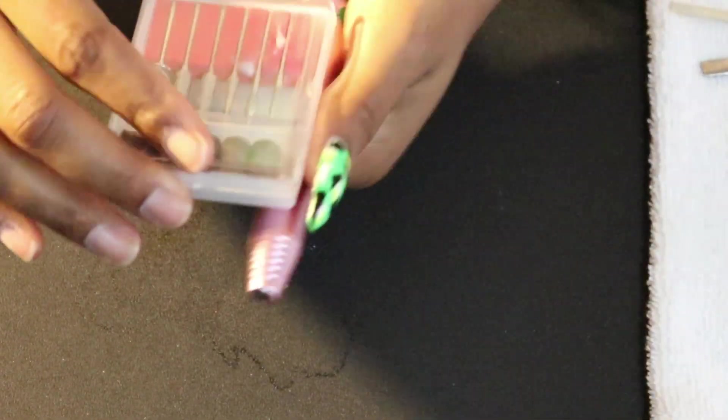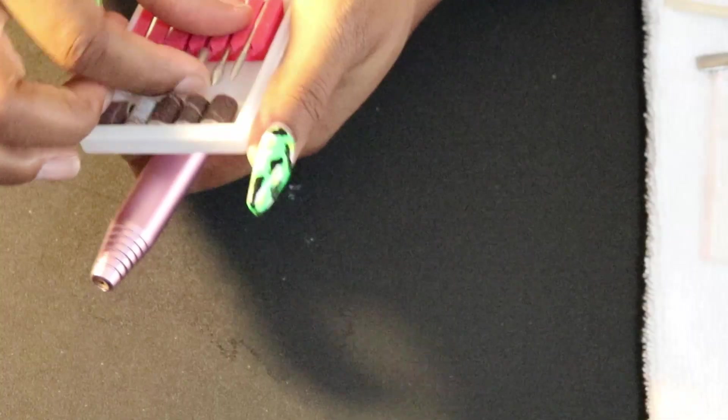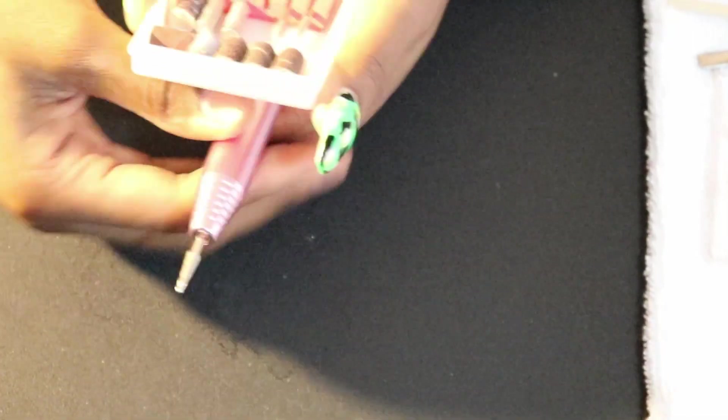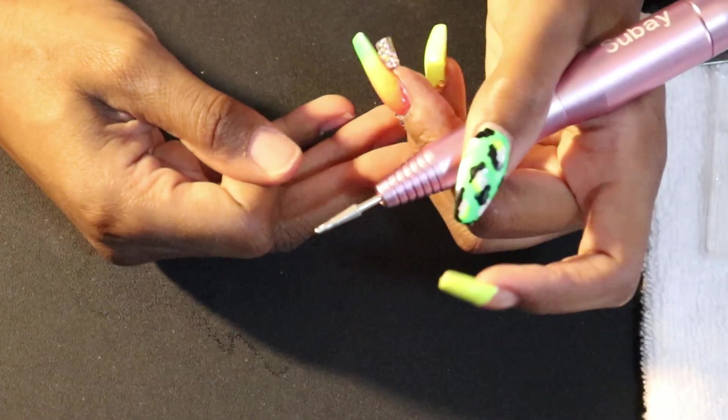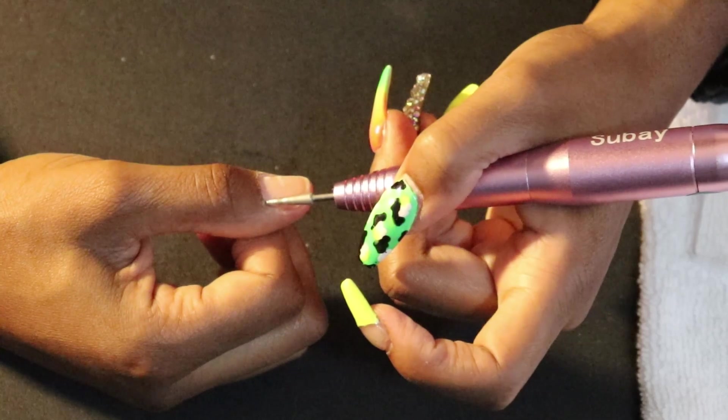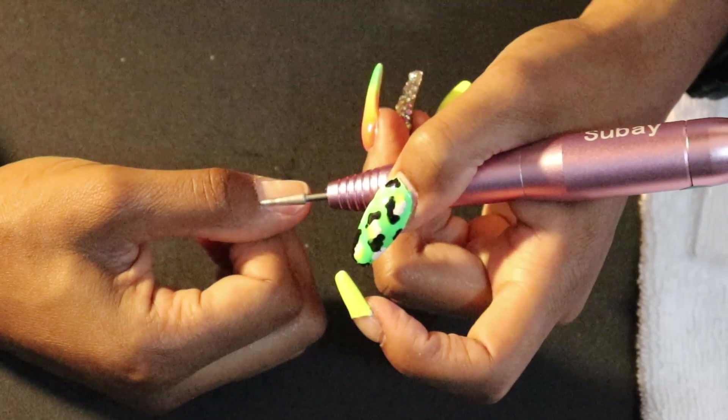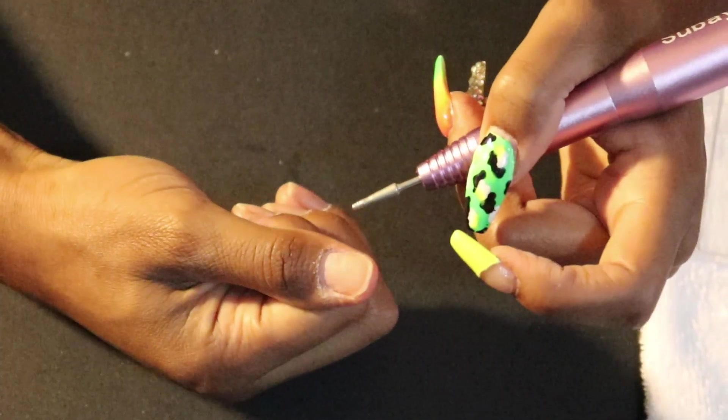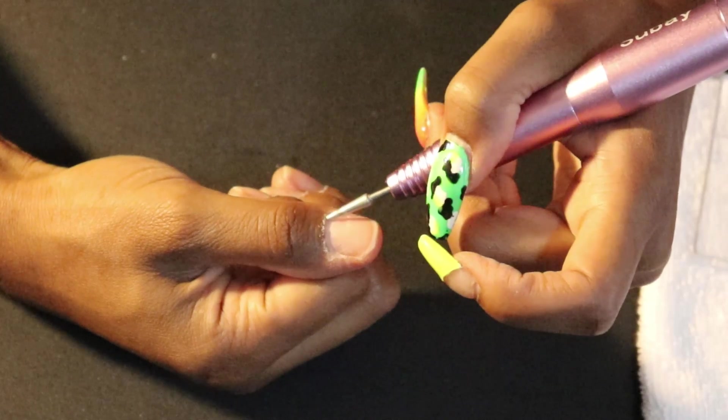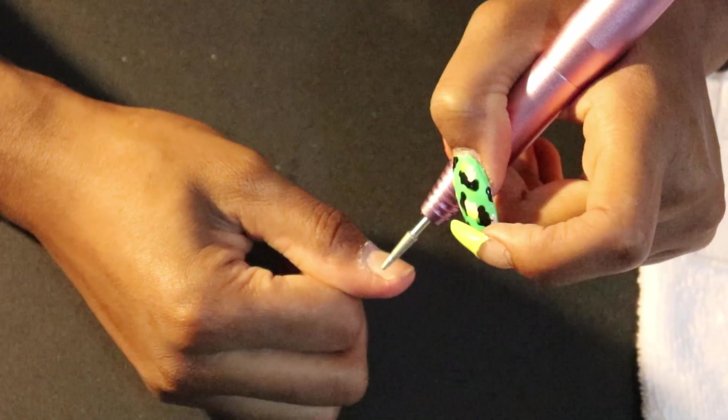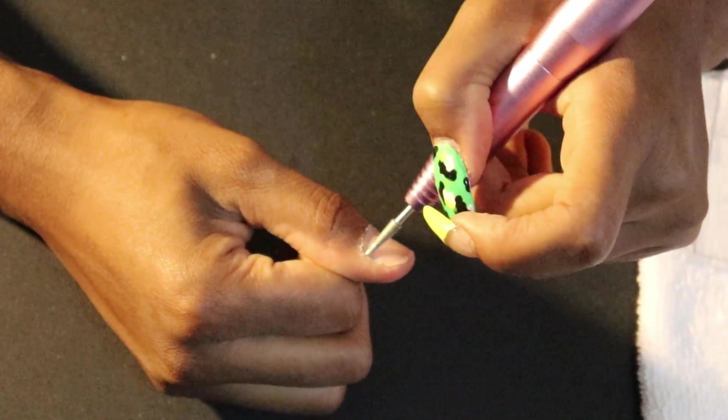Next, I'm going to go in with my e-file and grab this little cuticle bit to help me get in those corners and knock off the rest of the dead skin that's hanging on. Make sure that you don't have the e-file up too high. You can really be gentle with this step. I prefer using a safety bit so that it's never going to hurt my skin.